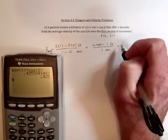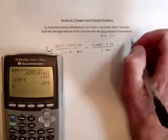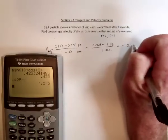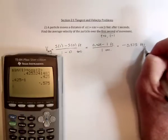And then finally, we've got the numerator is 0.425 subtract 1. So it's negative 0.575 feet per second.